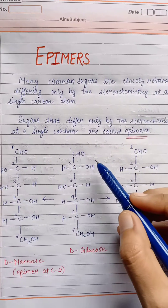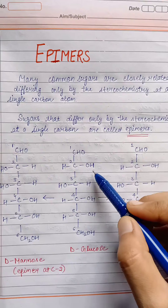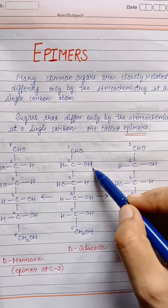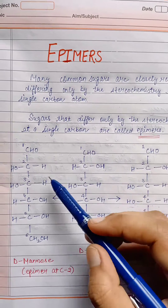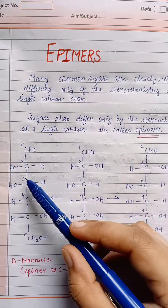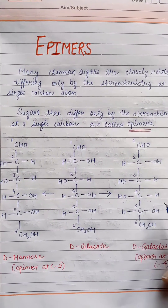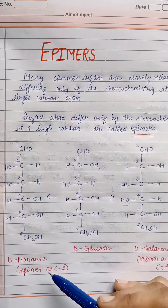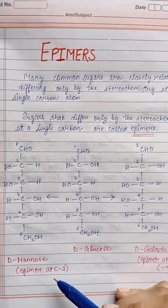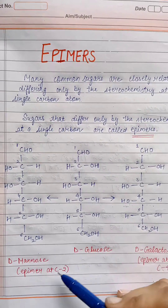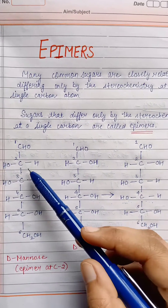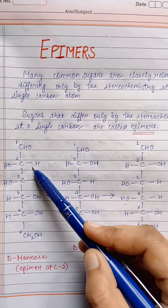In the case of glucose, the OH group is on this side, and it varies in the case of mannose. So D-mannose is an epimer at carbon number 2.